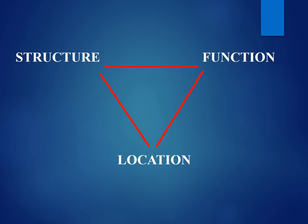In this lab, we're going to be introducing this idea of structure, function, and location. This is the overarching theme of the lab. Although we explicitly discuss it in Lab 6, this is going to be a very important concept moving forward in this lab as well as in your careers. These three components are going to be intricately related, and each component is going to dictate the other two. By slightly altering one of these components, the overall physiological function of something is going to be compromised.